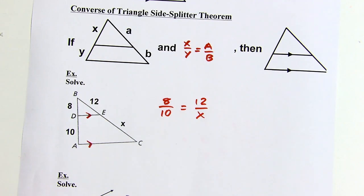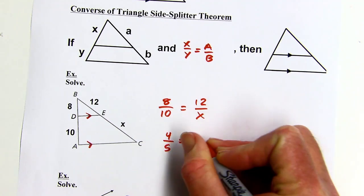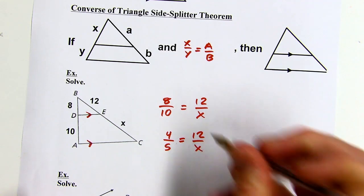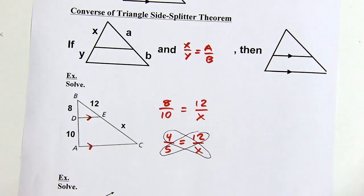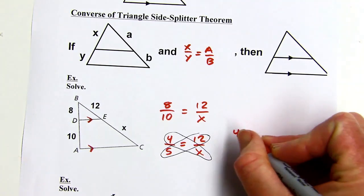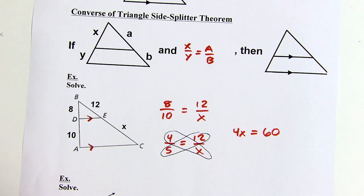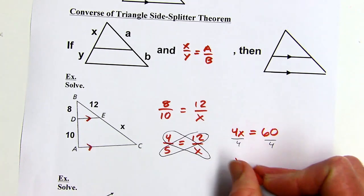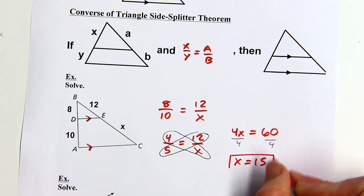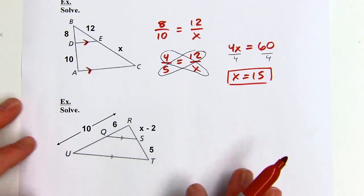You could cross multiply right away and it would work fine. I'm noticing 8 over 10 can be reduced, so I'd rather reduce that first to deal with smaller numbers. After reducing and cross multiplying, 4x equals 12 times 5, which is 60. Dividing by 4 gives x equals exactly 15.